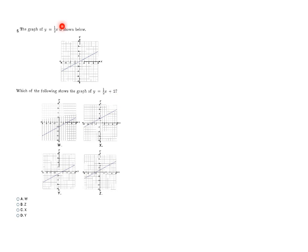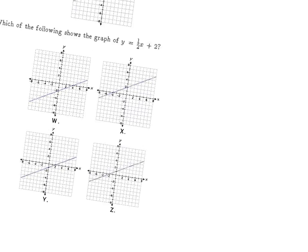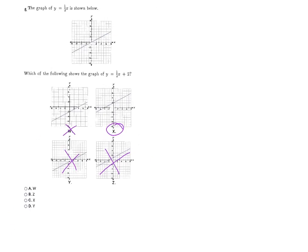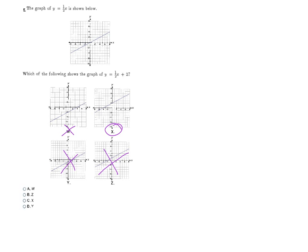Here our original equation is y equals one-half x, and they're asking which graph matches y equals one-half x plus two — so a y-intercept of two has been added while the slope stays the same. The line must cross the y-axis at positive two. Graph w crosses at negative two — eliminated. Graph x crosses at positive two — stays. Graph y crosses at negative one — eliminated. Graph z crosses at positive one — eliminated. X is the only one with a y-intercept of two, so the final answer is c.